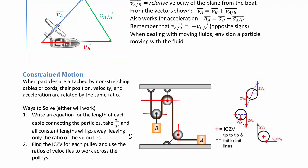The other way to work through these problems is using instantaneous centers of zero velocity (ICZVs), a concept from Chapter 16. ICZVs function like an instantaneous point of fixed-axis rotation. We can find some by observation — a cable not moving at the ceiling has a point of zero velocity there, and because the cable doesn't stretch, we can identify an instantaneous center of zero velocity at that location as well.